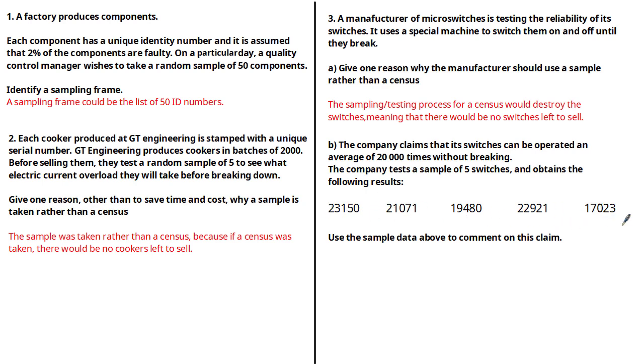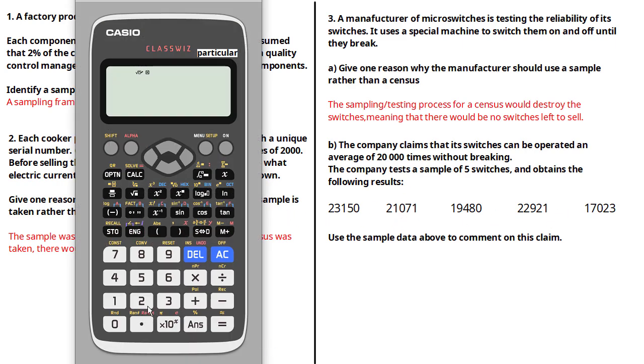So let's calculate the average of this sample data to make a comment about the claim of the company. Given the sample data, we can work out the average by taking the sum of these values and dividing by five, as there are five switches. So we've got 23,150 plus 21,071 plus 19,480 plus 22,921 plus 17,023. Adding those values gives us 103,645 divided by 5, which gives us 20,729.